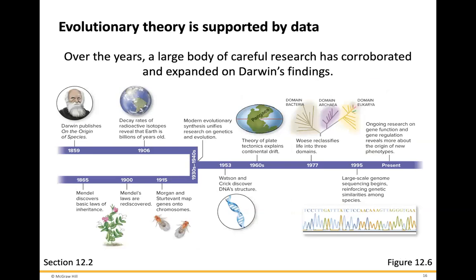A lot of evolutionary theory is supported by data. Over the years, a large body of careful research has corroborated and expanded on Darwin's findings. Darwin published his famous book 'On the Origin of Species,' which essentially talks about evolution — the main gist being survival of the fittest. Here we can see a timeline of evolution over the years, all the way up to even the 1950s when DNA was discovered.